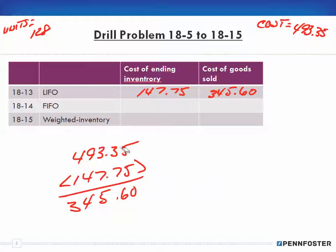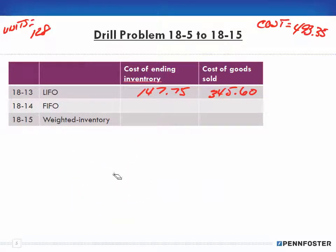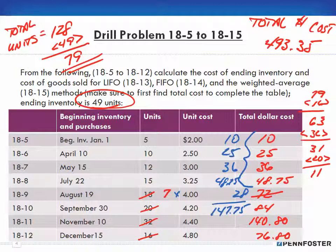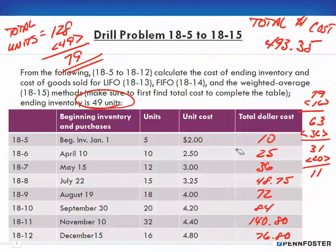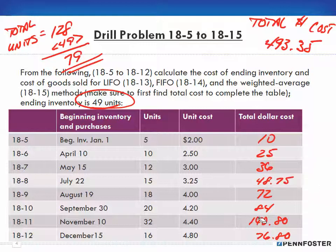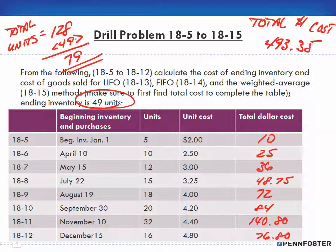That's how LIFO works. For FIFO, the process is basically the same except we go in the opposite direction — first in, first out instead of last in, first out. We still have 128 total units and 49 units in ending inventory, so we still need to subtract out 79 units from inventory.